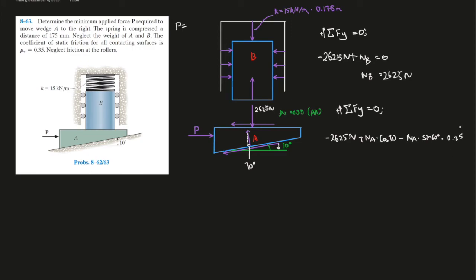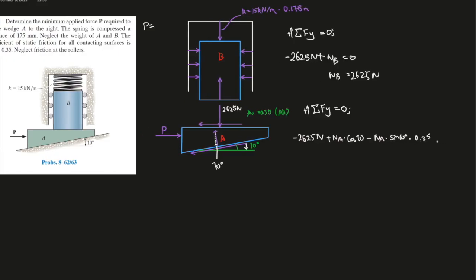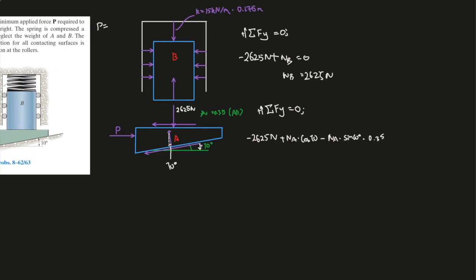I mean, mathematically, ingeniously speaking, if I want to explain my math, I should have put 0.35 in front of Na, but you guys get the idea. I'm trying to find the y-direction component, y-component of what Na is.